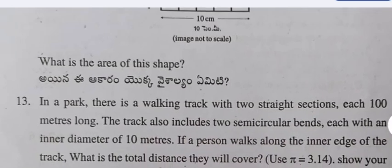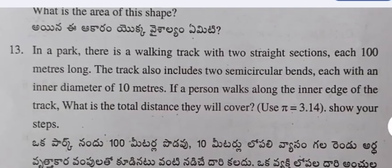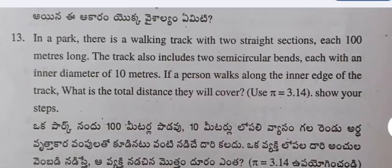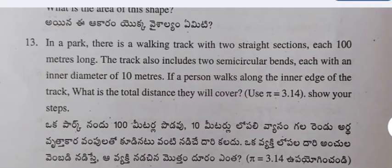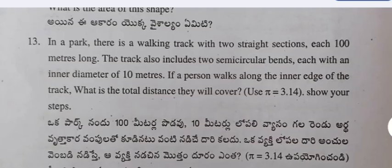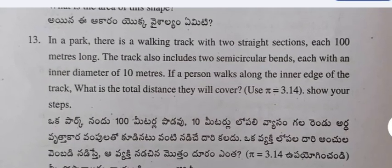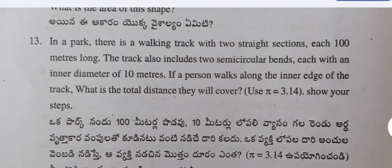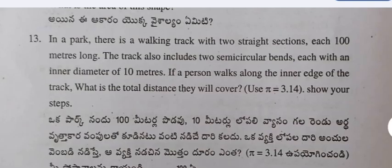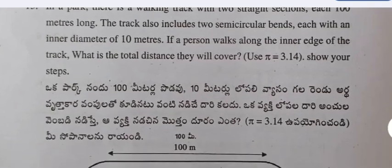Question 13 (continued): A student created a craft using sticks and colored paper as shown. What is the area of the shape? Question 14: In a park, there is a walking track with two straight sections each 100 meters long. The track also includes two semicircular bends, each with an inner diameter of 10 meters. If a person walks along the inner edge, what is the total distance they will cover? Show your steps.